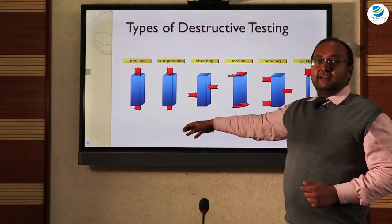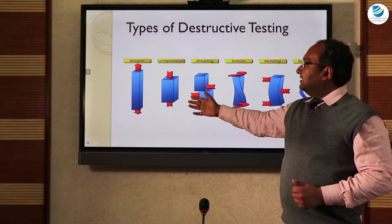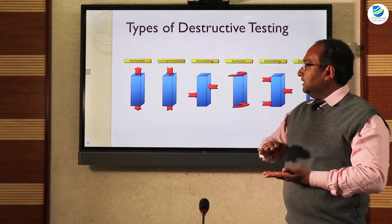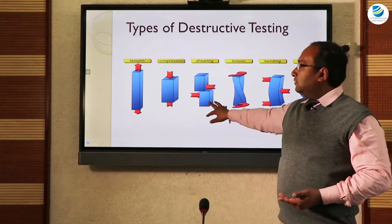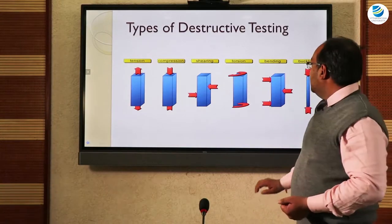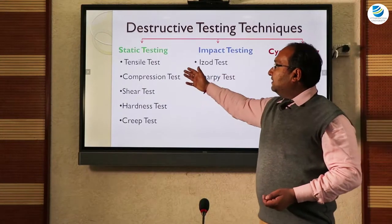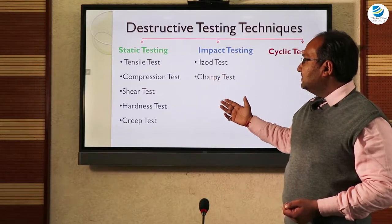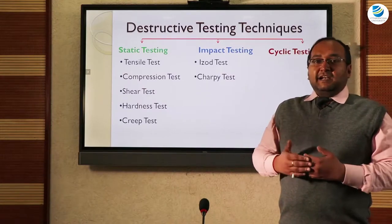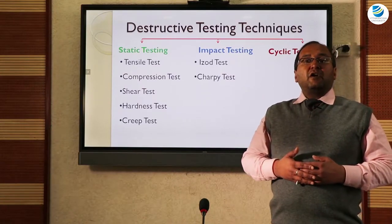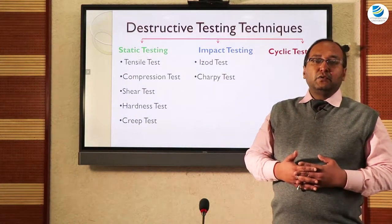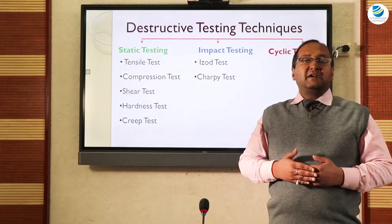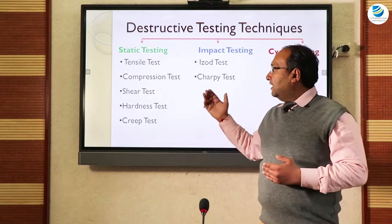In the tensile test, the material gets elongated; in compression, the material is compressed; and in the shear test, the material is loaded in shear. Tensile and compression tests are mostly performed on the Universal Testing Machine, known as UTM. The hardness test is performed using various methods such as Brinell hardness and Rockwell hardness, among other kinds of hardness tests.